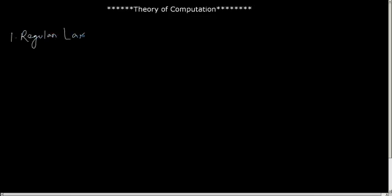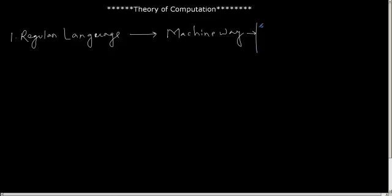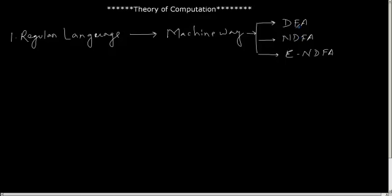Now for a regular language, we have taken two approaches to describe a regular language. One approach is called as the machine way of looking at a language, in which we have discussed three kinds of machines that accept a regular language: DFA (deterministic finite automata), NDFA (non-deterministic finite automata), and NDFA with empty transitions. We have seen that from one kind of automata, we can always construct another kind of machine — DFA, NDFA, and epsilon NDFA.